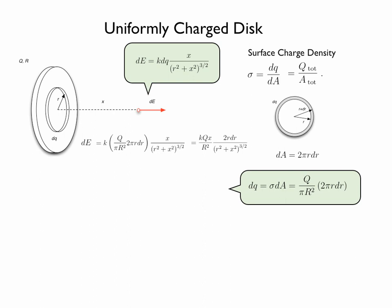The electric field of the disk will then be equal to kQx over the radius of the disk squared, times the integral of 2 times little r dr over little r squared plus x squared to the power of three halves, with limits from 0 to big R.